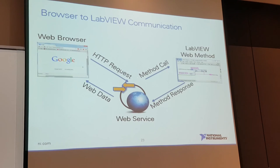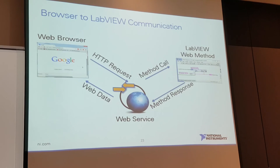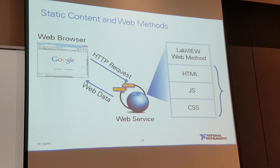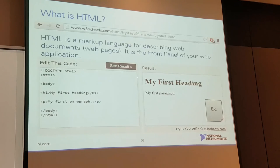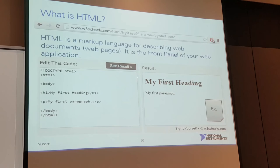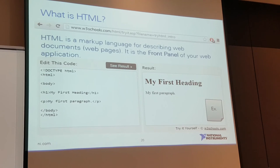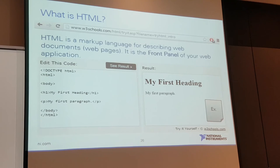In that example we were using VI method calls — from our browser we gave an HTTP request through the URL, and our web service in the background handled that request and called the web method with the parameters we allocated. Now let's look at the static content you can load as part of your web services — HTML, JavaScript, and CSS files. These are standard web technologies, and there's a lot of free learning content on the web to get familiar with HTML and JavaScript programming. There is a bit of a learning curve, but it is a fairly simple markup language.